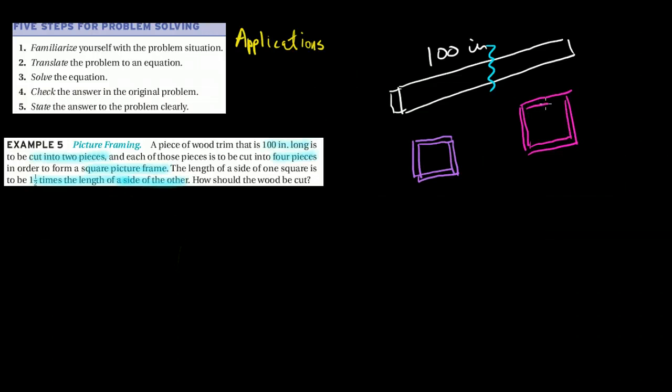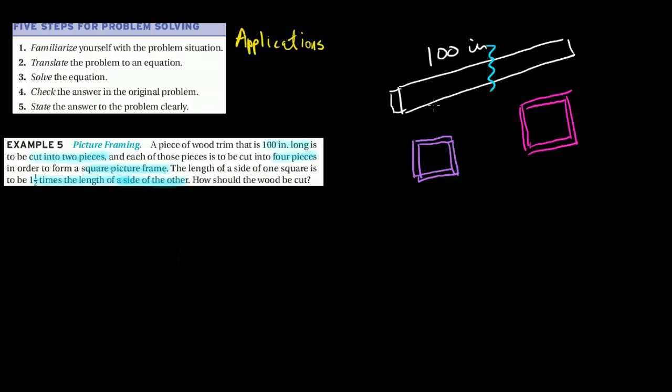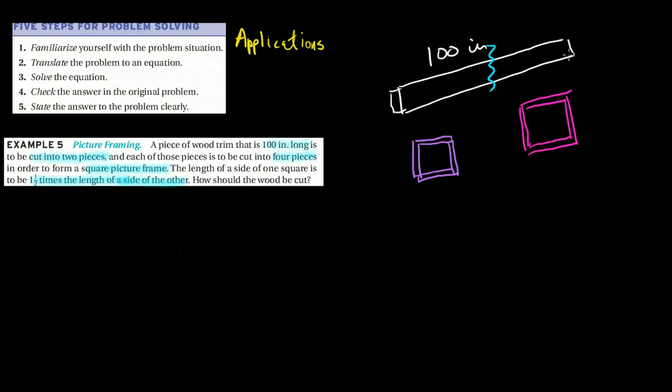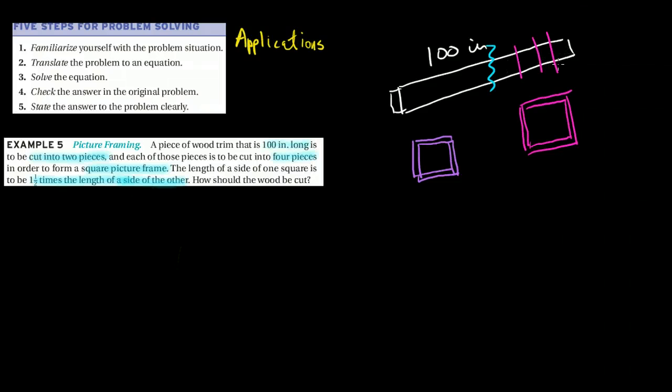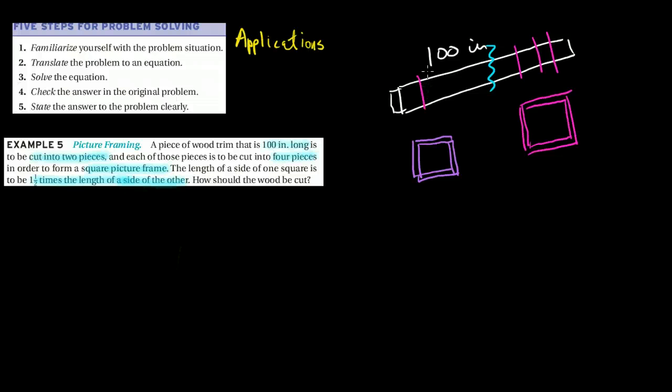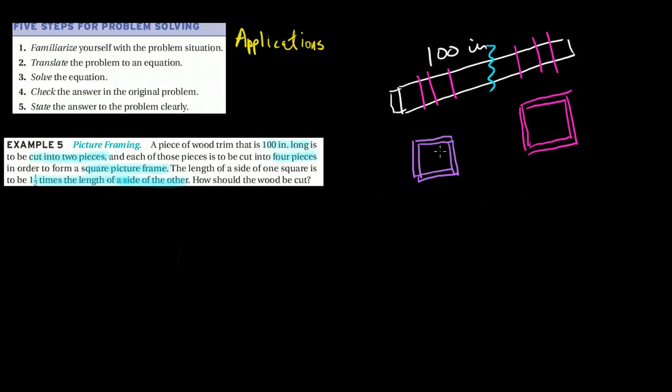And then with the other part of the cut, we're going to make another slightly larger picture frame. So here is what's going to happen with the wood that we have. So each of those pieces is cut into two pieces and then we're going to make smaller cuts. One, two, three, four to get four pieces for that picture frame and one, two, three, four pieces for this picture frame.